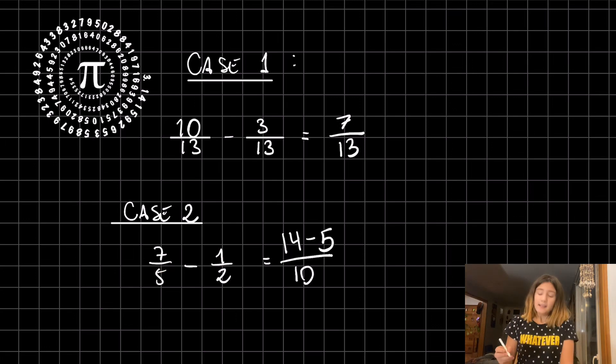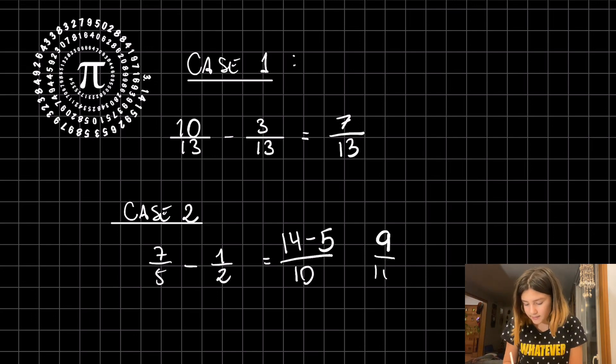Then we have to subtract it, and 14 minus 5 is 9. And here we have the answer, nine tenths.